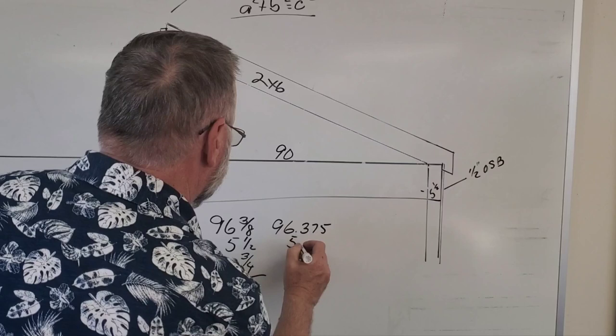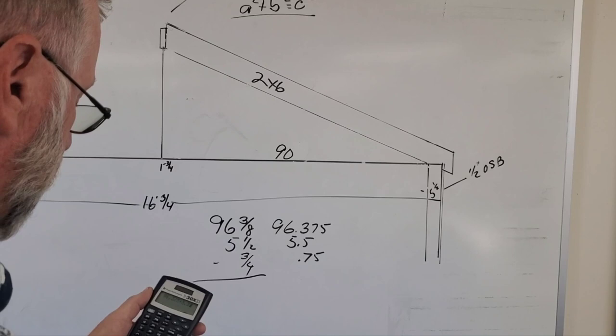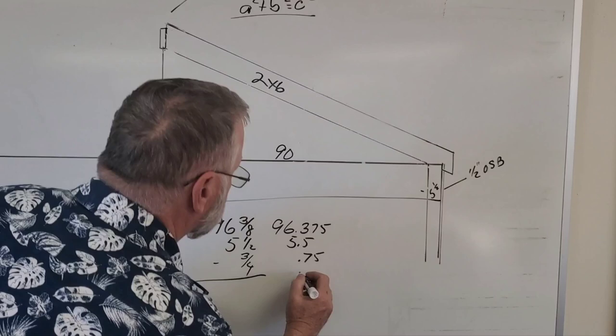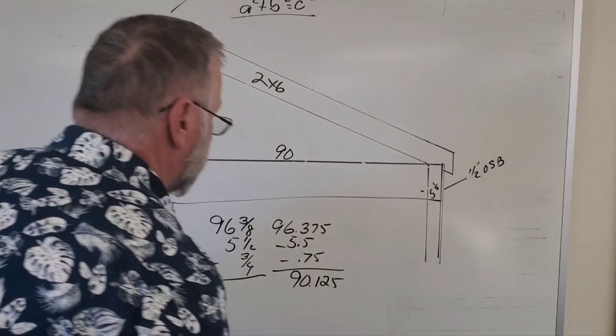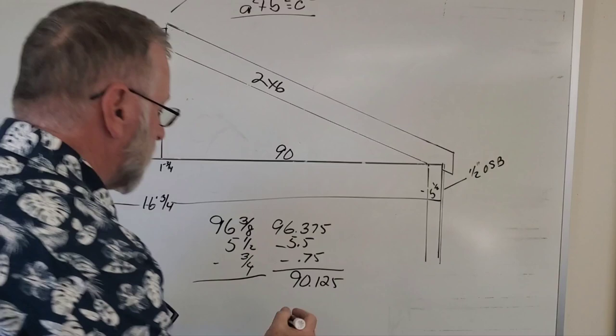So that's going to be 96.375 minus 5.5 for the wall minus half of the ridge, which equals 90.125. Now if you want to get that back to a fraction, subtract 90 so you have just the decimal there, multiply it times 16 to give you sixteenths. Two sixteenths is one eighth, so this is 90 and 1/8.